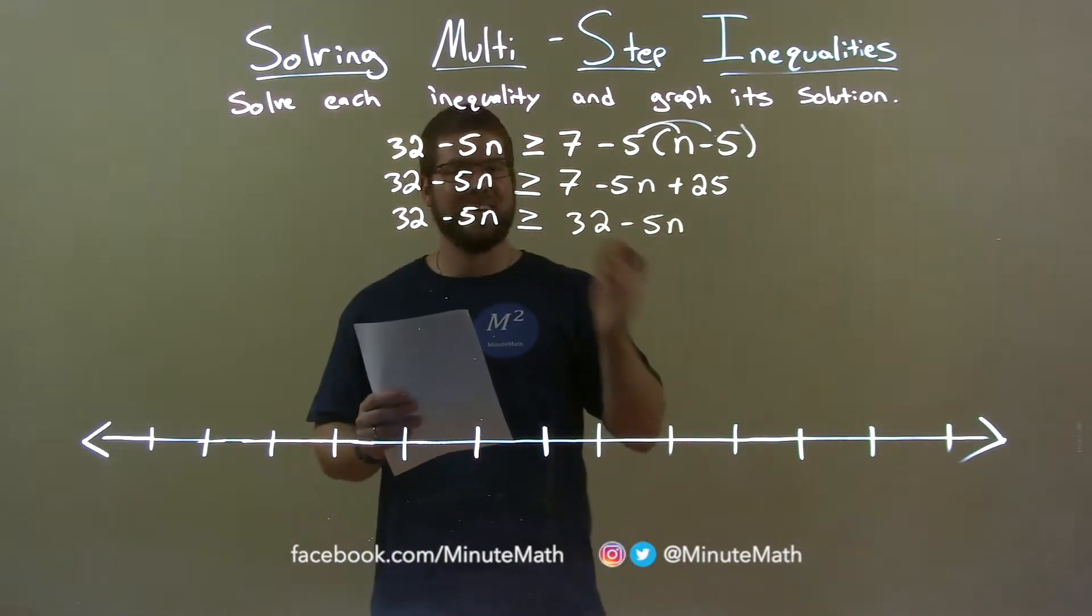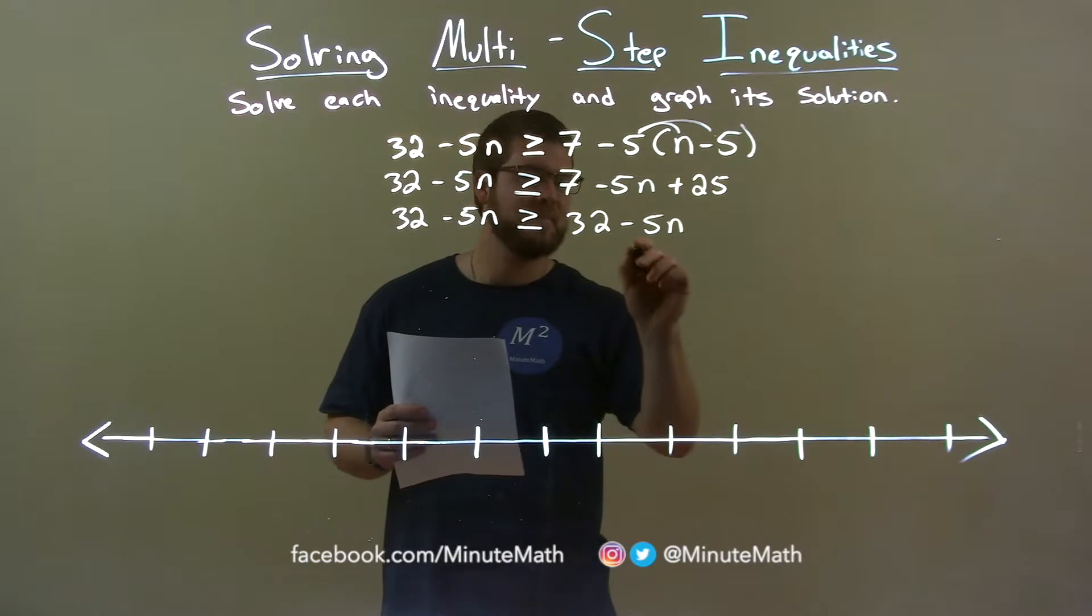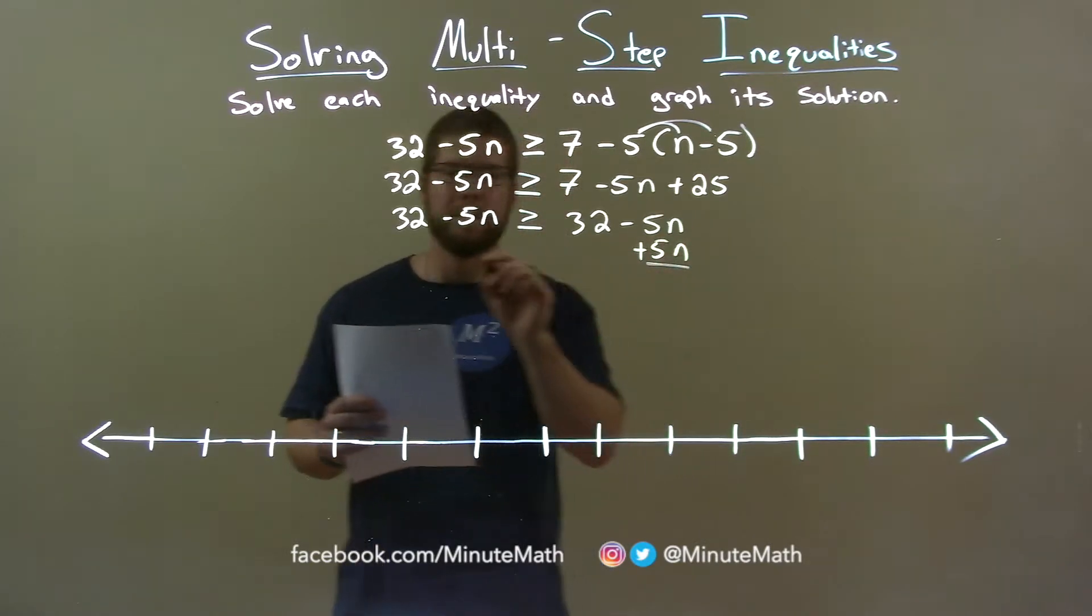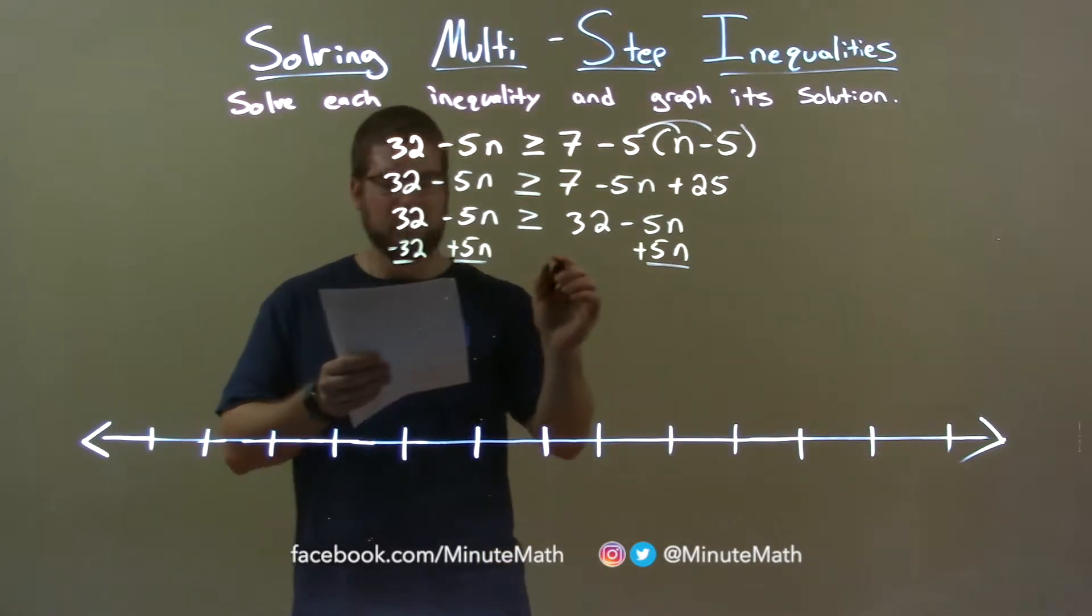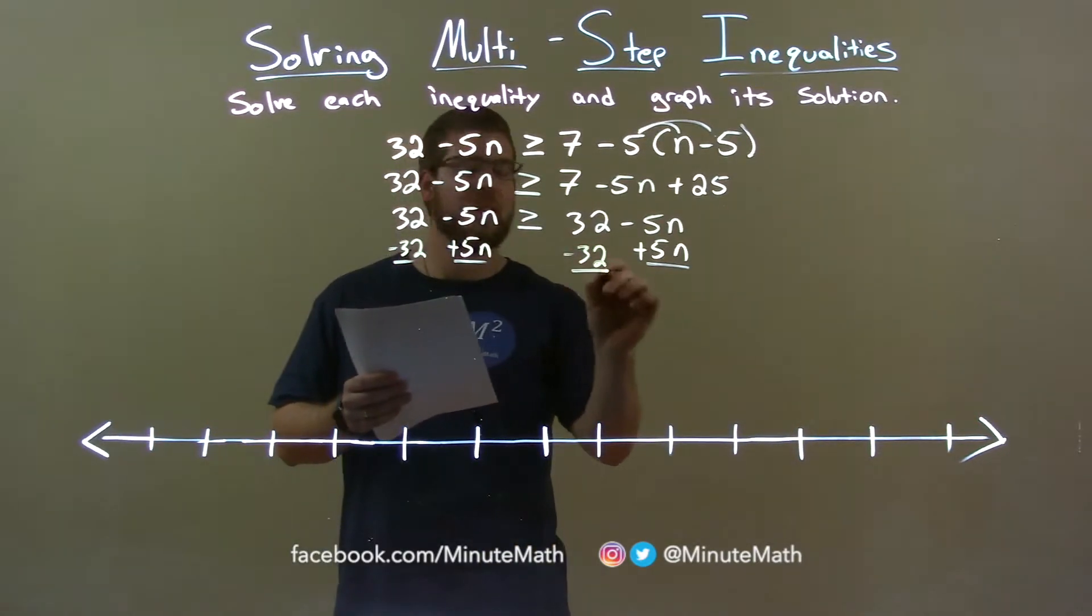So, now let's bring our n to the left, our numbers to the right. Add 5n here, 5n there and we subtract a 32 here and subtract a 32 there.